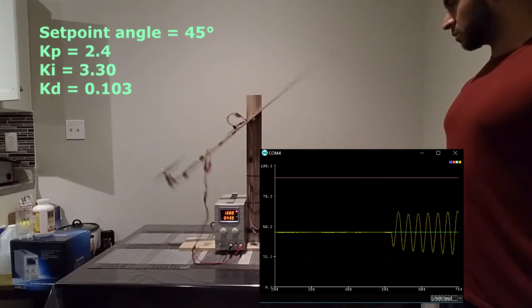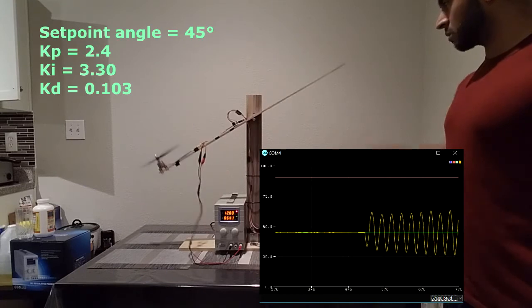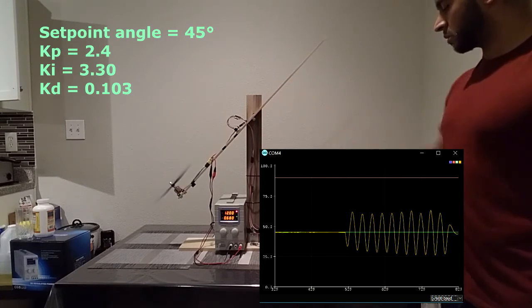As you can see, our system is so underdamped that it's oscillating. This is why it's important to have the derivative term to dampen this oscillation.